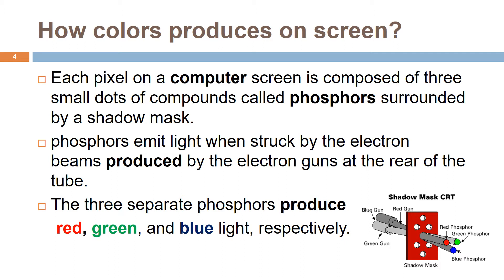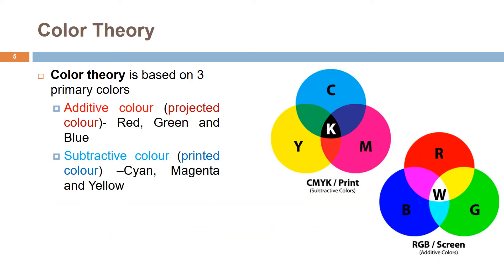The three separate phosphors produce red, green, and blue light, respectively. Modern color theory is based on three primary colors known as additive color or projected color, which are red, green, and blue, and printed colors or subtractive color, which are cyan, magenta, and yellow.